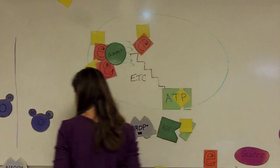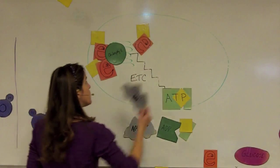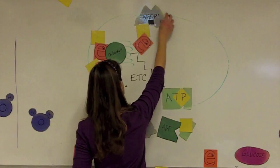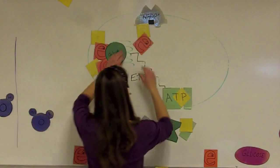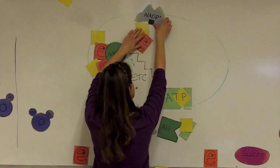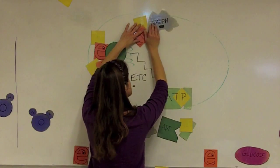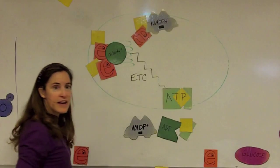Only this time those high energy electrons are going to be picked up by a different carrier, NADP+. It's going to pick up the high energy electrons and some hydrogen ions and be charged up into NADPH.